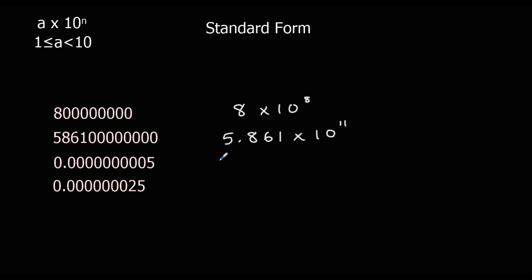Thirdly, we've got 5 times 10. This time it's going to go backwards — we're going to divide, so it's going to be a negative power. 5 divided by 10: 1, 2, 3, 4, 5, 6, 7, 8, 9, 10 times. So it's 5 times 10 to the power of minus 10.